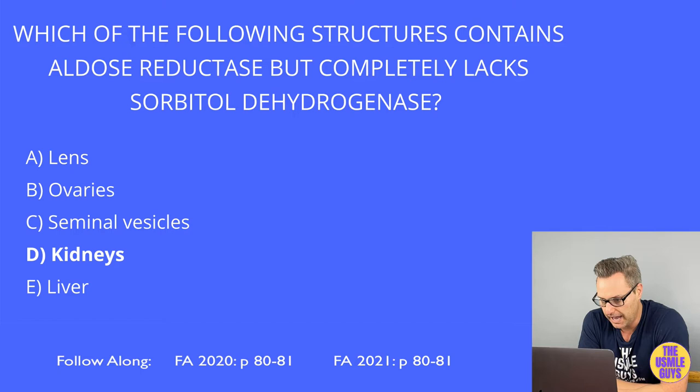Essential fructosuria is benign and typically asymptomatic, characterized by the presence of fructose in the blood and the urine. It is asymptomatic because hexokinase can pick up the slack and convert fructose into fructose-6-phosphate.